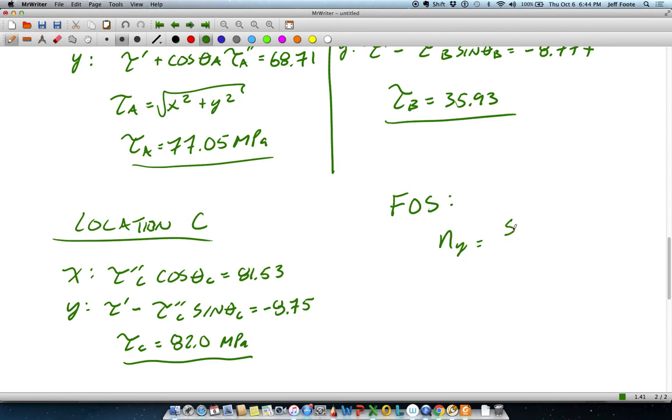So to finally calculate a factor of safety based on this scenario, we'll have ny is equal to the shear strength of the material divided by Tau C. 199.1 divided by 82 gives us a factor of safety for this problem of 2.43.